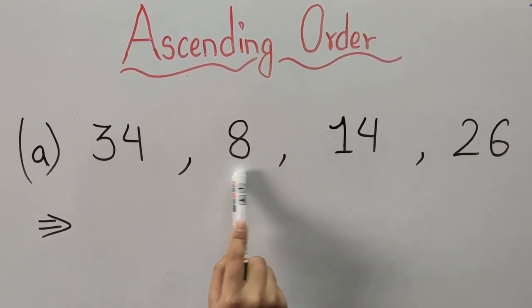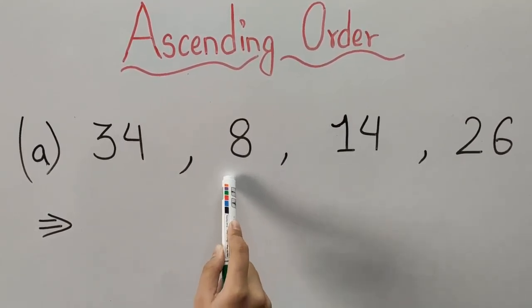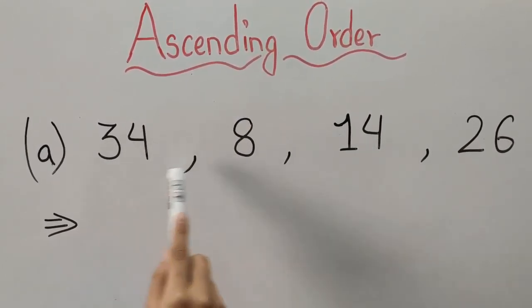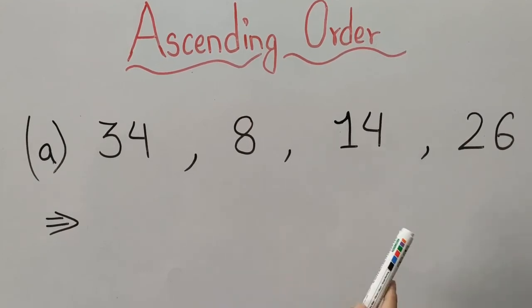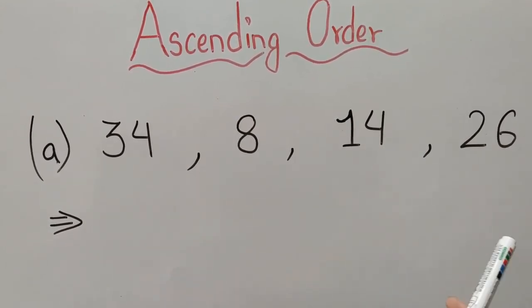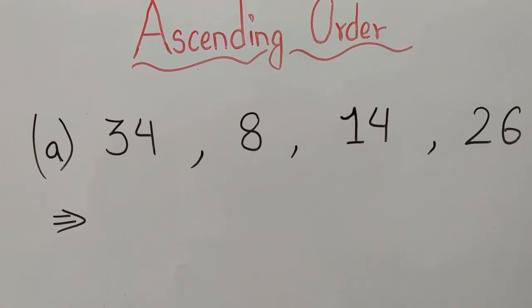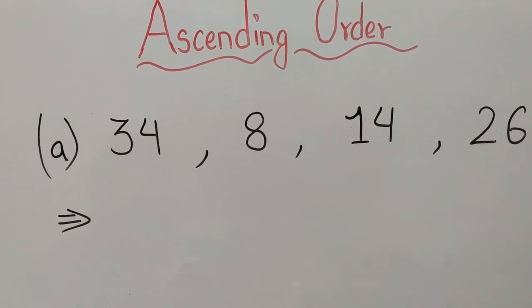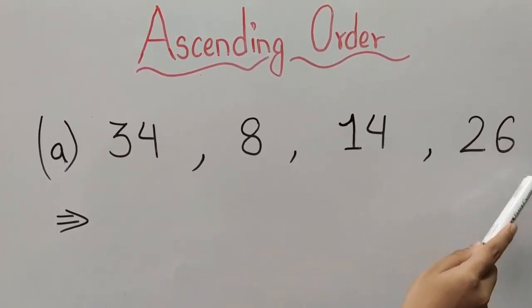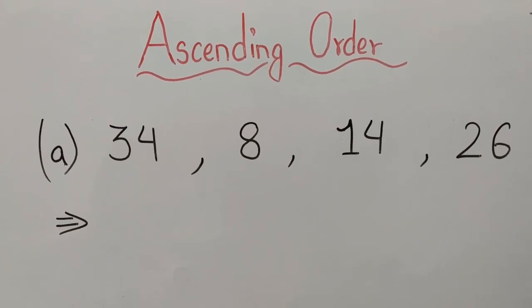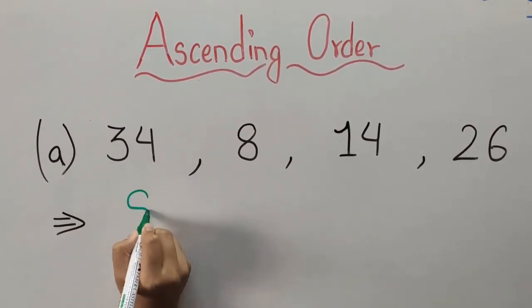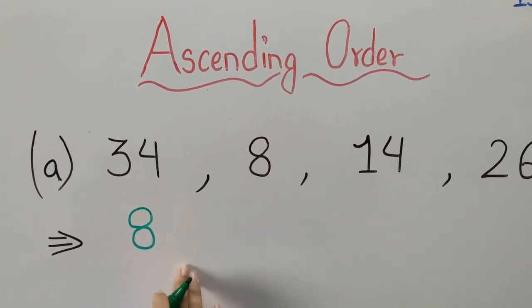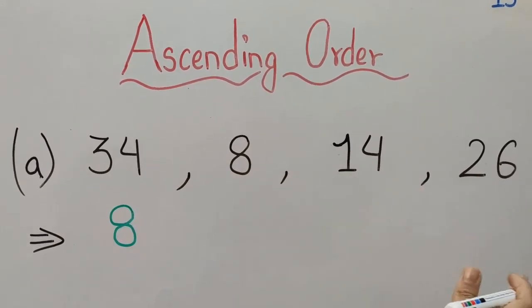But this one is a single digit number. Eight is the single digit number as it is only one number, but the rest are two digit numbers. So always remember: single digit numbers are always smaller than two digit numbers.